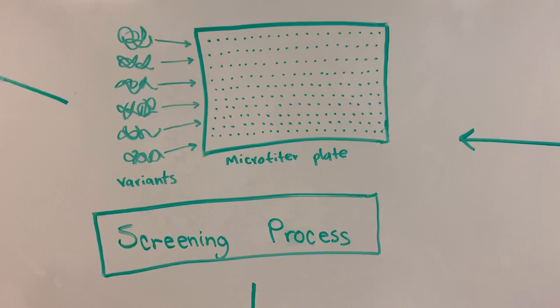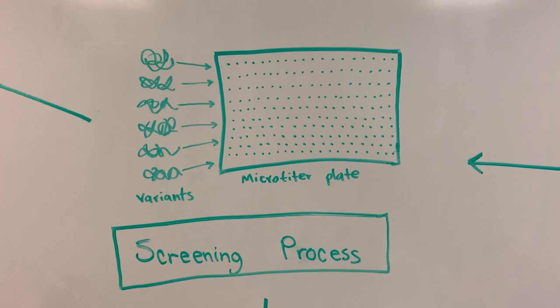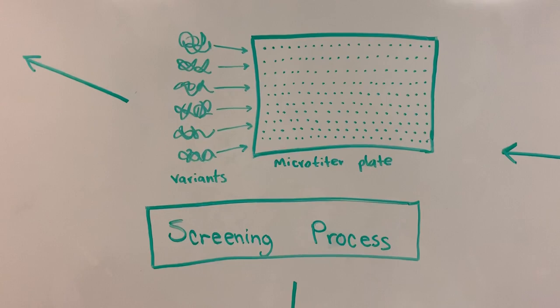In this case, I'm showing you one method, which is a microtiter plate expression. You can do many variants using this method. Depending on the characteristic you want to change in the protein—like activity, stability, or selectivity—you want to screen for that specific characteristic.